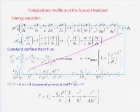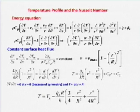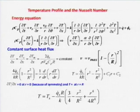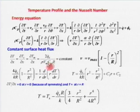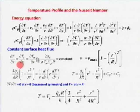Resuming where we left off: steady, incompressible, fully developed flow — both thermally and hydrodynamically — with constant heat flux boundary condition in a circular pipe. The equation reduces to V(∂T/∂x) = (α/r)(∂/∂r)(r∂T/∂r), and dT/dx = 2Q_dot_s/(ρV_mC_pR), which is known since I know the constant heat flux, average velocity, radius, and C_p.